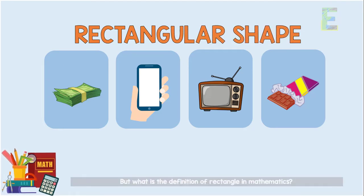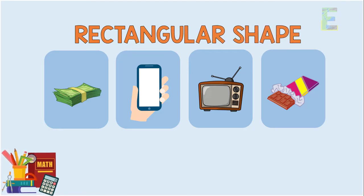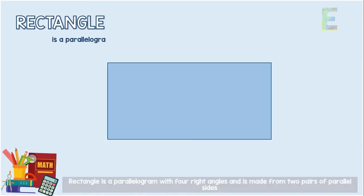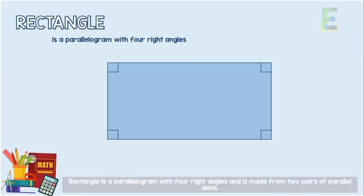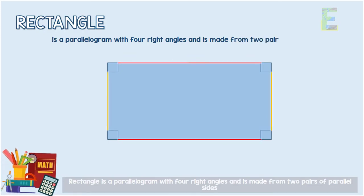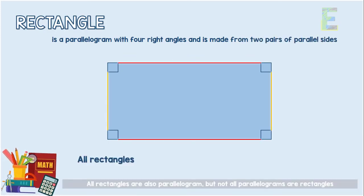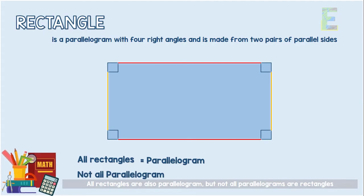But what is the definition of rectangle in mathematics? A rectangle is a parallelogram with four right angles, and is made from two pairs of parallel sides. All rectangles are also parallelograms, but not all parallelograms are rectangles.